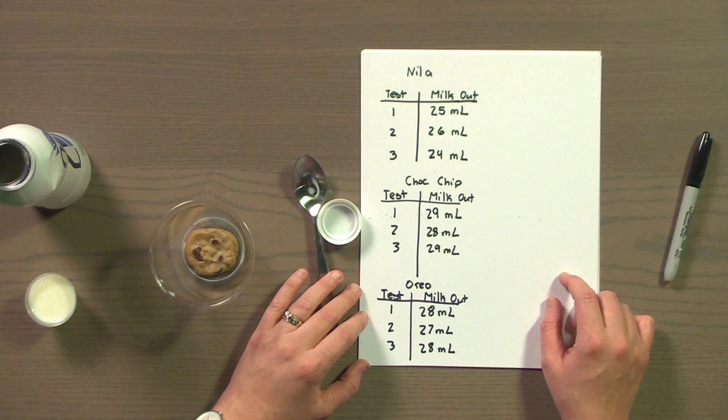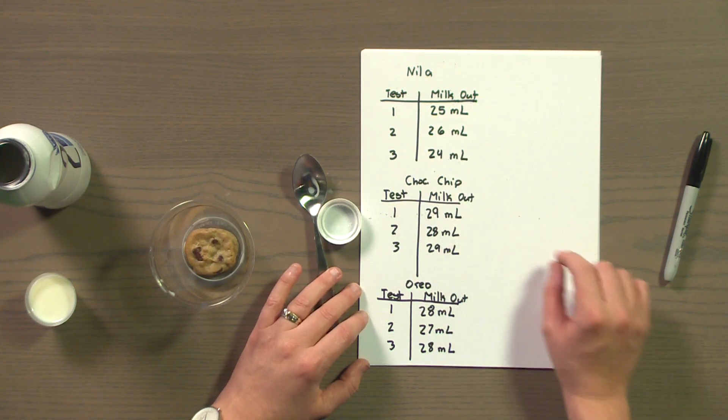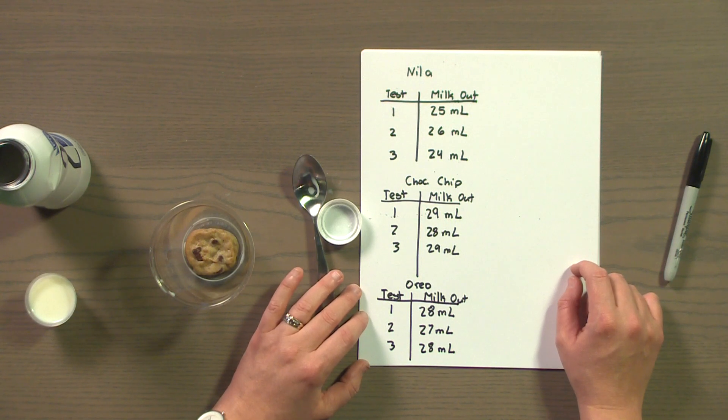So, here's our finished t-charts with our results. By looking at our data, we can now easily see that vanilla soaked up the most milk because it had the smallest amount of milk come out. And we know this because we designed and conducted a great fair test. Thanks for watching this video. Now, if you pardon me, I have some cookies to eat.